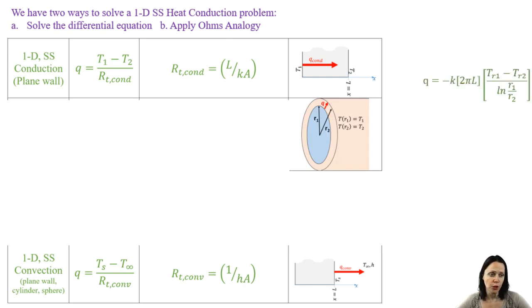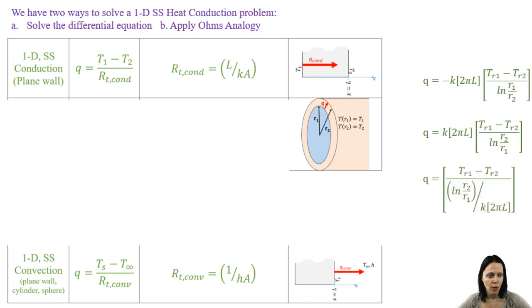Well, taking the equation for q that we previously had and getting rid of that negative sign so that the natural log of r1 over r2 becomes the natural log of r2 over r1, and then getting the temperature difference on top, we come up with the thermal resistance in cylindrical coordinates for conduction.